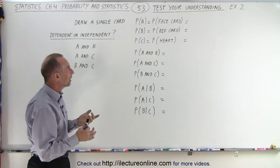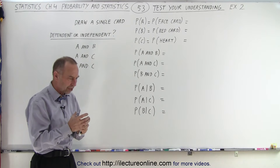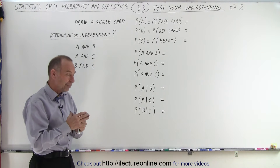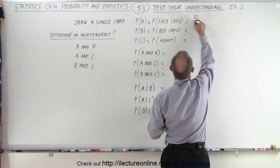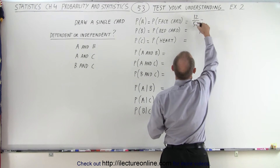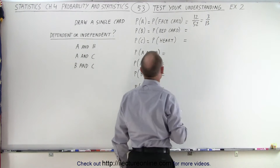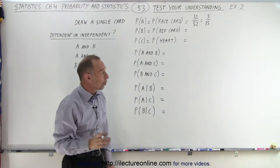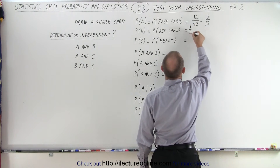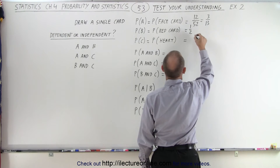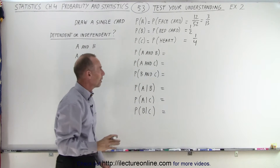First of all, the probability of pulling a face card: there are three face cards for every suit, so that means three times four, which is 12 face cards out of a total of 52 cards. Dividing by four, we get three out of 13. How about a red card? Half the cards are red and half are black, so that gives us one half. And the probability of pulling a heart — one out of every four cards is a heart, giving us one quarter. So those are the three probabilities.